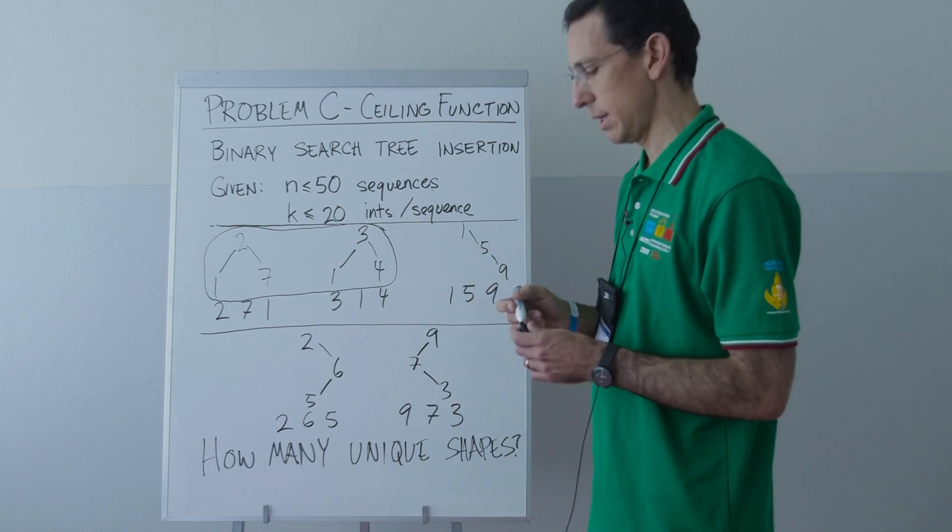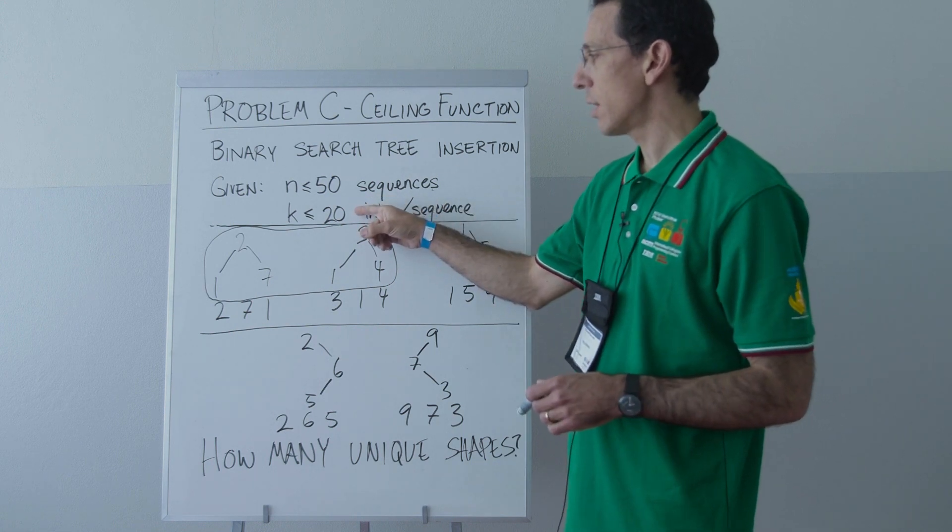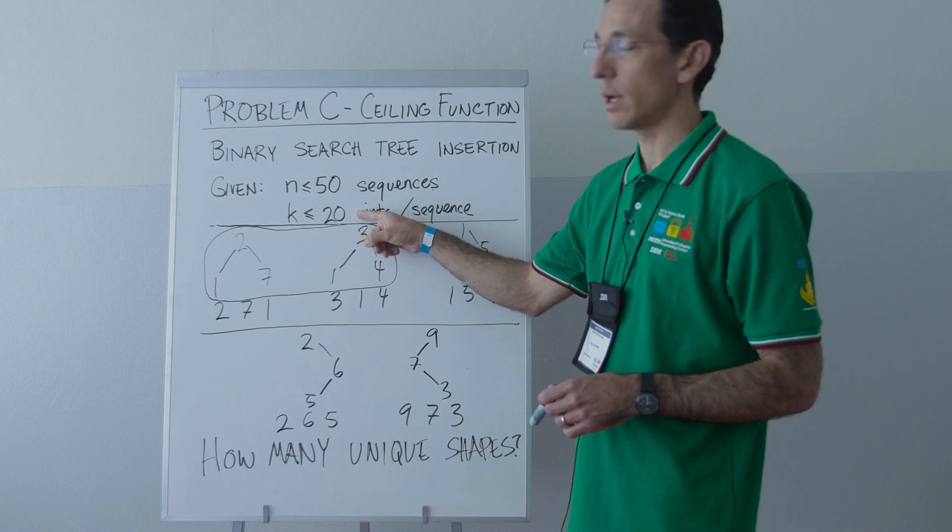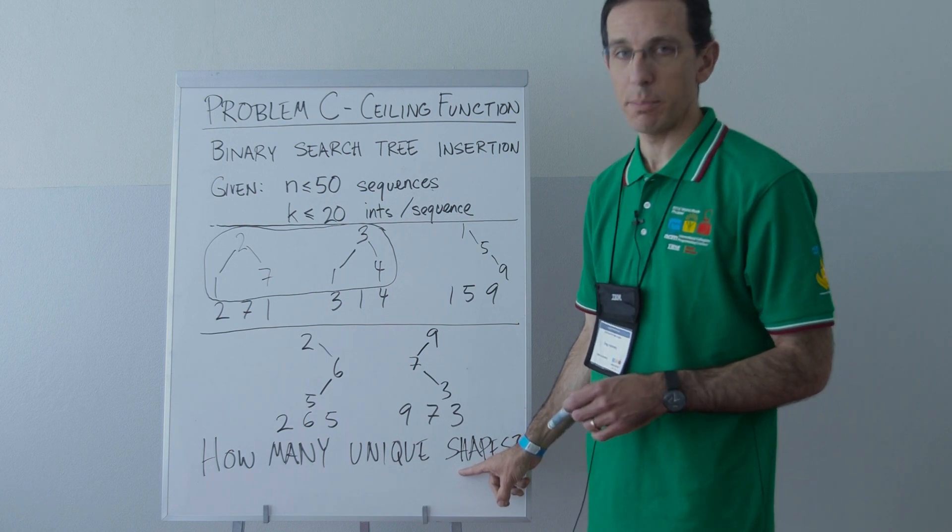And so the question is, given n sequences, each of which contains k unique numbers, unique within its own sequence, how many unique tree shapes do we get?